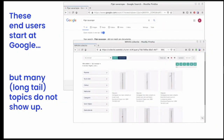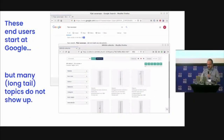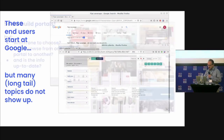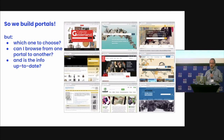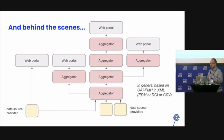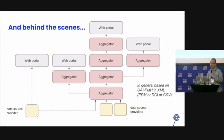These end users usually start with Google. They find stuff, but many topics do not show up. So we build portals — a lot of them — which one to choose? Can I browse from one portal to the other? Are they interlinked? Is the information within these portals up to date? Because usually behind the scenes of web portals there's a lot of aggregation, copying of data from sources — not an ideal situation.